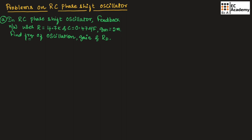Let us consider the first problem. In RC phase shift oscillator, the feedback network uses R = 4.7 kΩ, C = 0.47 μF, and gm = 2 mA/V. Here we need to find the frequency of oscillation, gain, and the value of RD. Since we need to find RD, this oscillator is designed using MOSFET.